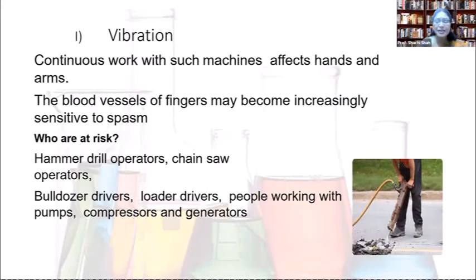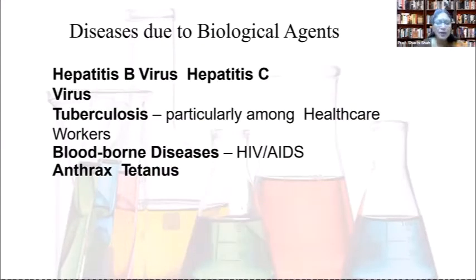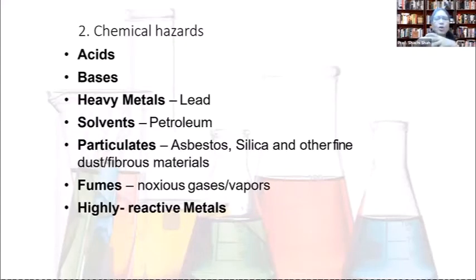Biological hazards involve viruses, fungi, bacteria, parasites, insects, birds, animals, or other biological agents. Examples include hepatitis B, hepatitis C, tuberculosis, AIDS, anthrax, tetanus, and SARS-CoV-2. Many doctors and health workers have been exposed to this biological agent during the COVID-19 pandemic and many have lost their lives, making this a significant occupational hazard.